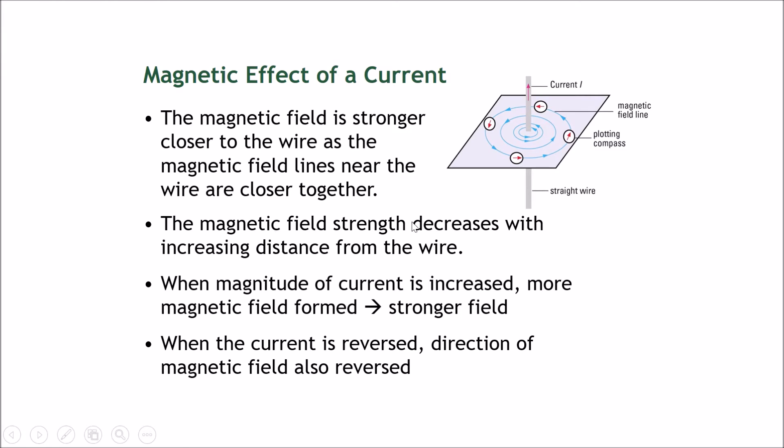The magnetic field strength will decrease with increasing distance from the wire. When the magnitude of the current is increased, which means if more current is going through, there will be more magnetic field formed, which means stronger fields. It means that if you draw these magnetic field lines now, you should draw them slightly closer together, because drawing them closer together means a stronger magnetic field.